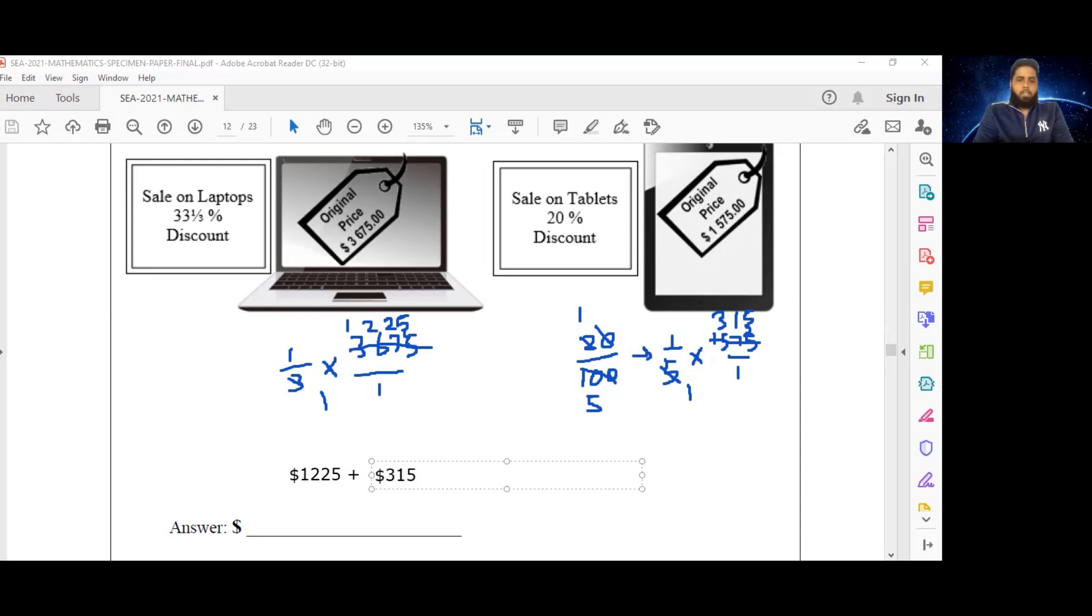Therefore, my total discount will be equal to $1225 plus $315, and that's going to give me a total of $1540 total discount.